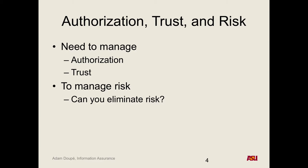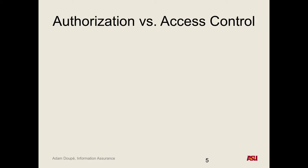Even controlling everything all the way down to silicon, humans are still implementing these things and can introduce bugs. We can't eliminate risk 100%, but that doesn't mean we shouldn't try. This leads us to: authorization versus access control. These terms are often used interchangeably, but let's be precise — what is access control and how does it relate to authorization?